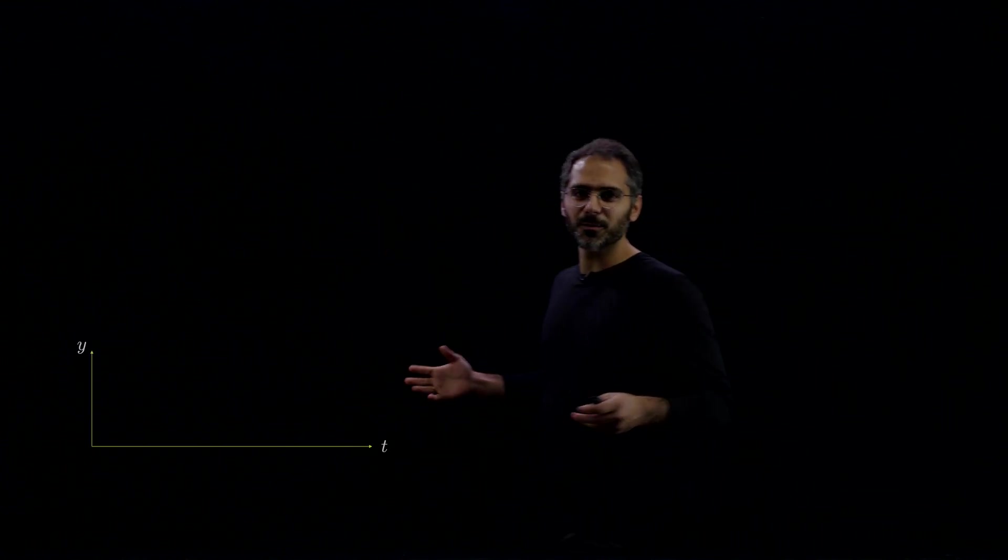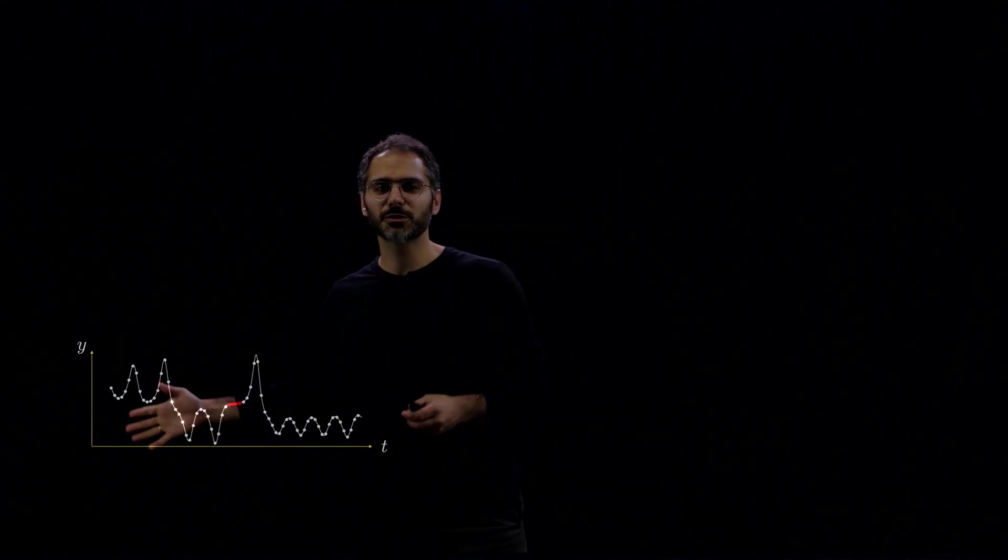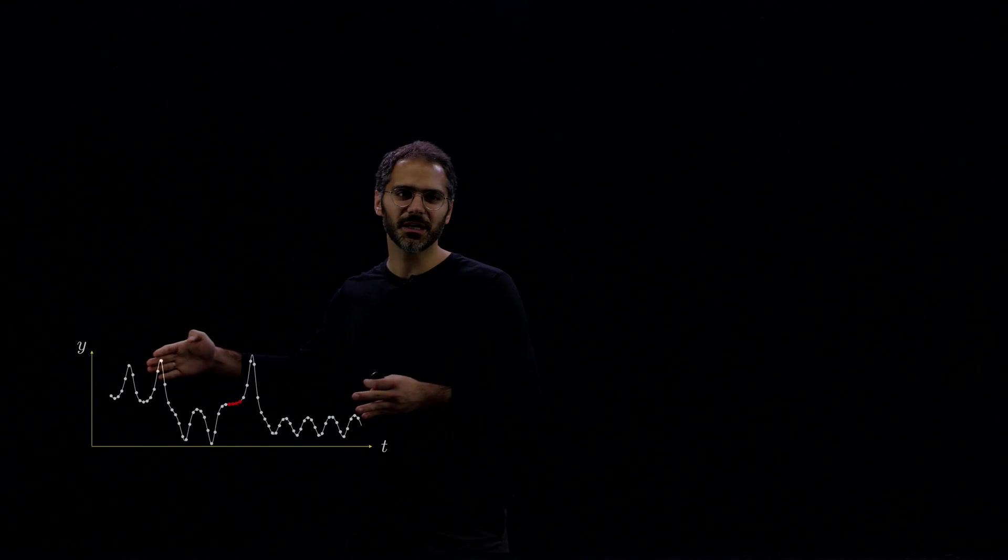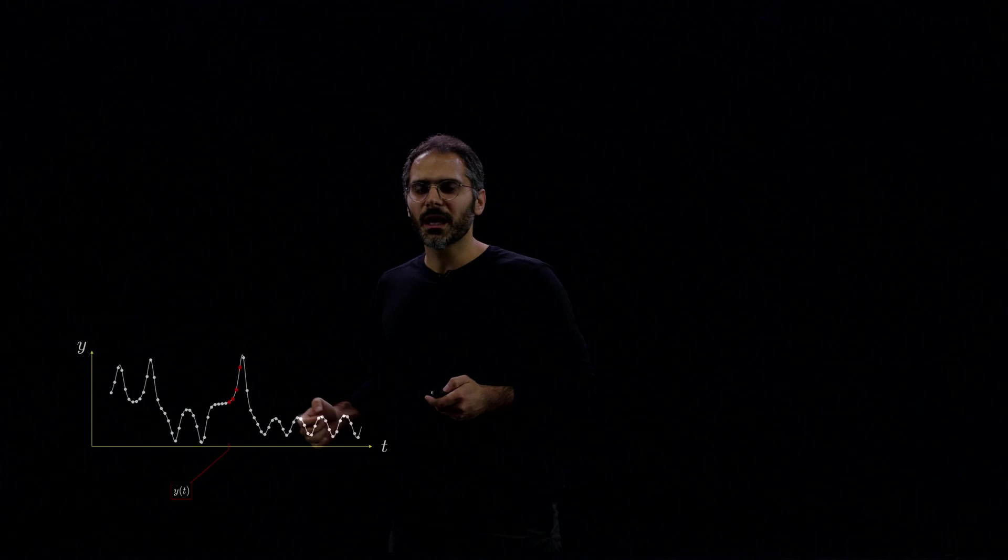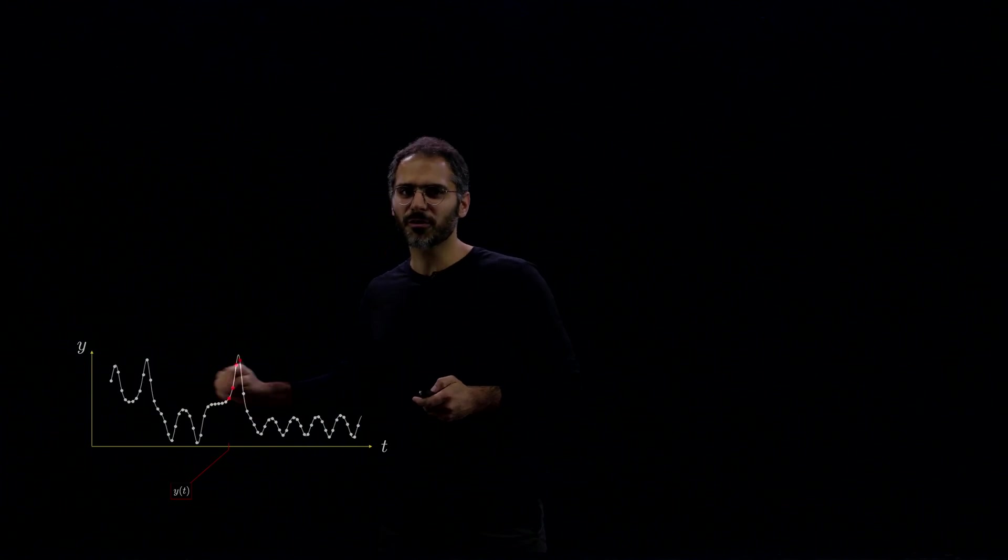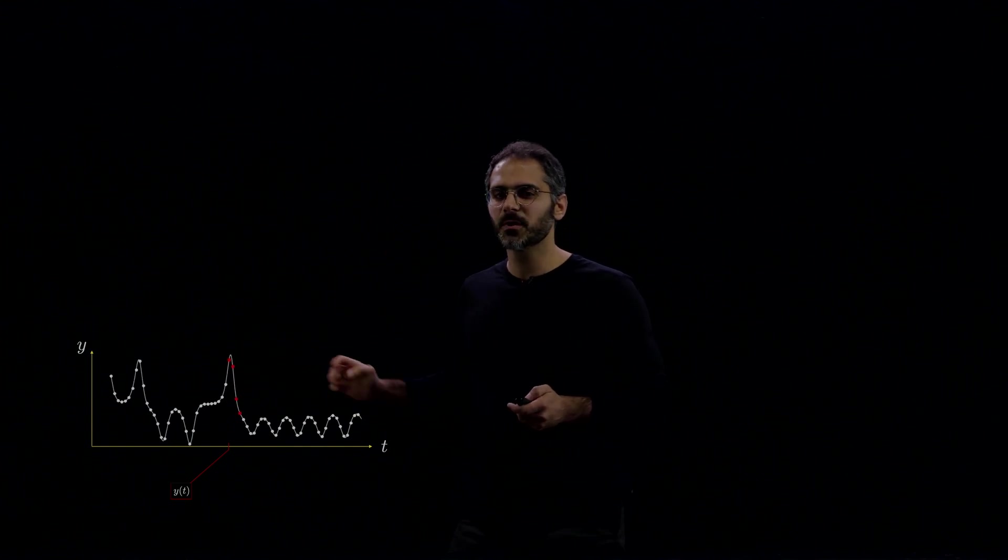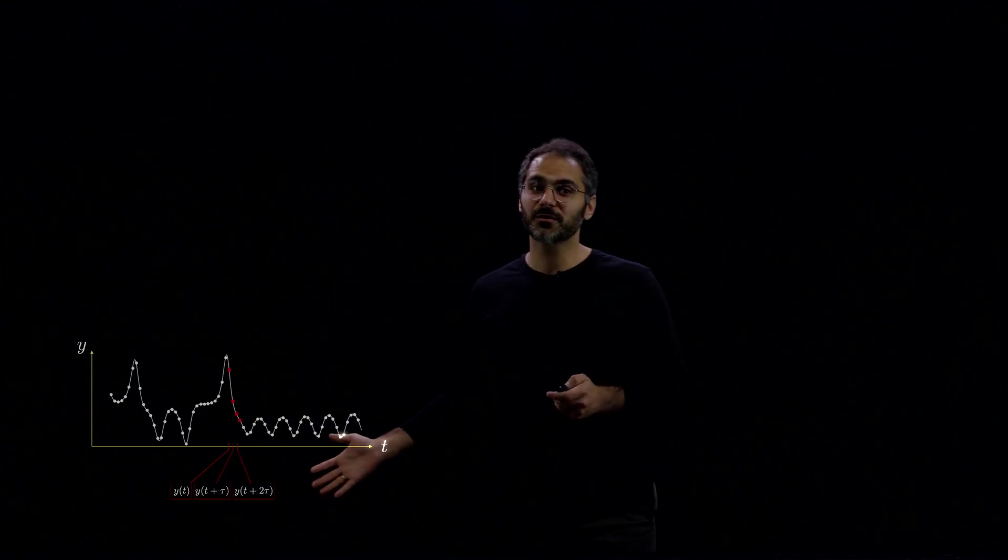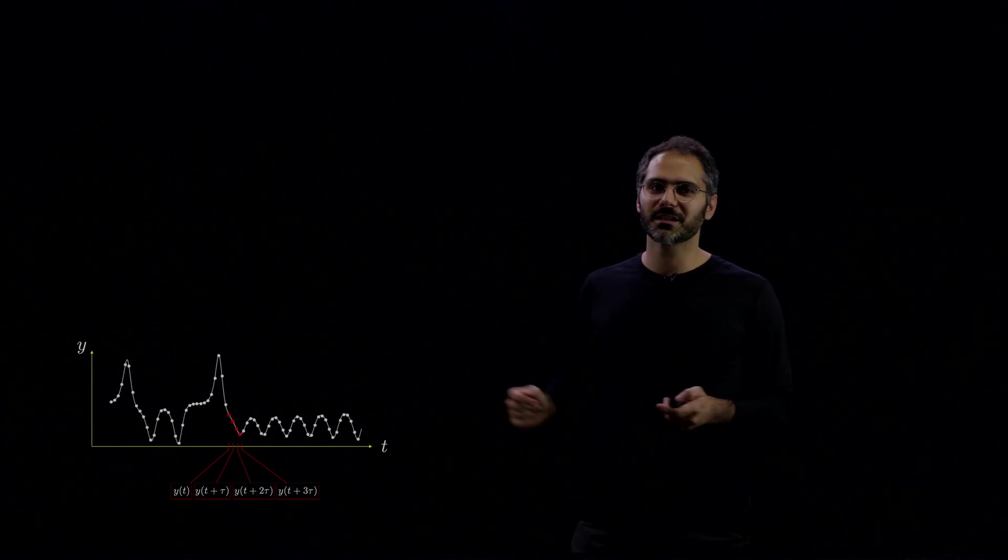So how does that work? Let's say you have one-dimensional measurements y(t). And here I'm showing these measurements being shifted in time, like shifting a window towards positive time. And let's highlight four of these measurements as we're shifting them in time: y(t), y(t+τ), y(t+2τ), y(t+3τ). So here I'm taking four, but you can take more.